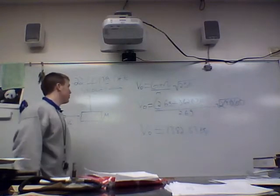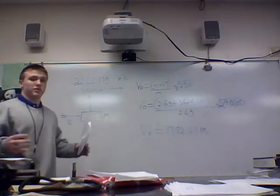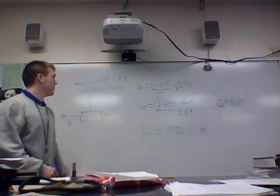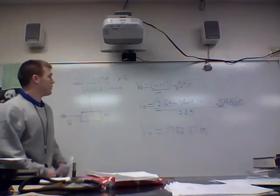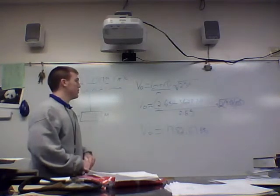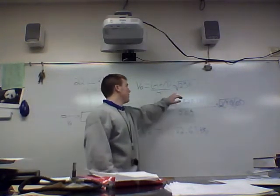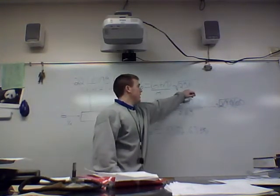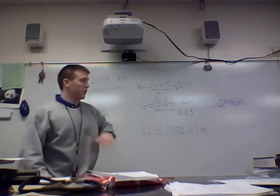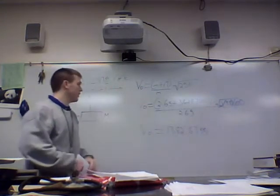We are going to start with the .22 long rifle and what we did with the ballistic pendulum to figure out the initial velocity of the projectile. First, we used this equation here and plugged in all the things that we knew. What we were trying to find through our test was the height that the block of wood would swing, so that we could calculate the initial velocity of the projectile.